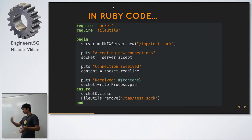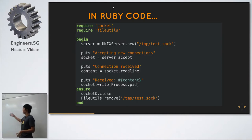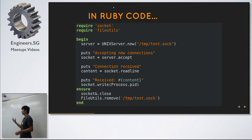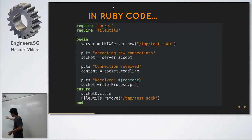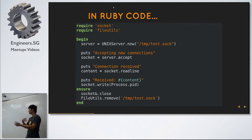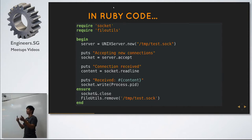In Ruby, it comes with a socket library by default — it's a thin wrapper around the Unix socket commands. To start a Unix server, you call UnixServer.new and pass it the file path where you want the socket file created. Once you have the server object, you call server.accept, which blocks until it receives a connection and returns a UnixSocket object. Once you accept a connection, you can read data from the socket.